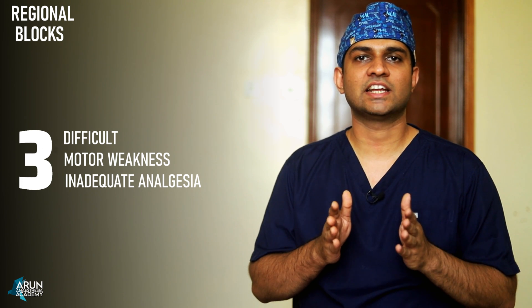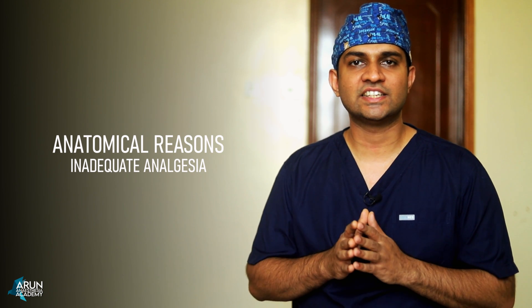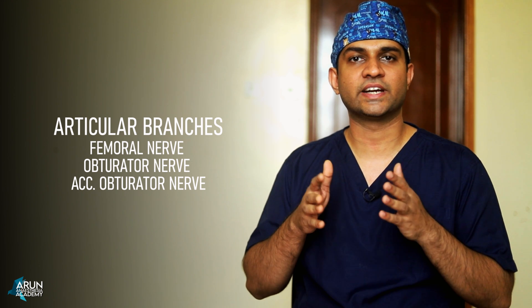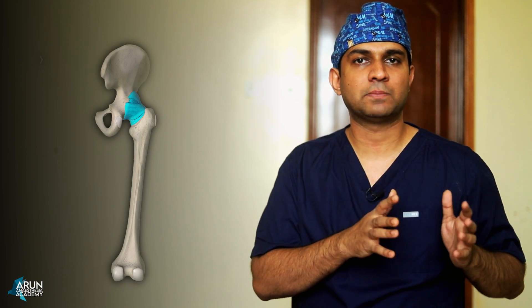For classic blocks like femoral nerve block and infrainguinal fascia iliaca block, there is lack of adequate analgesia due to anatomical reasons related to hip innervation. The hip capsule is the most important source of pain in hip-related pathologies. Anatomically, the hip capsule is divided into an anterior part — the nociceptive component — supplied by articular branches from the femoral nerve, obturator nerve, and accessory obturator nerve (present in 10–30% of population), and a posterior part which is mainly mechanoreceptors and does not contribute much to nociception.